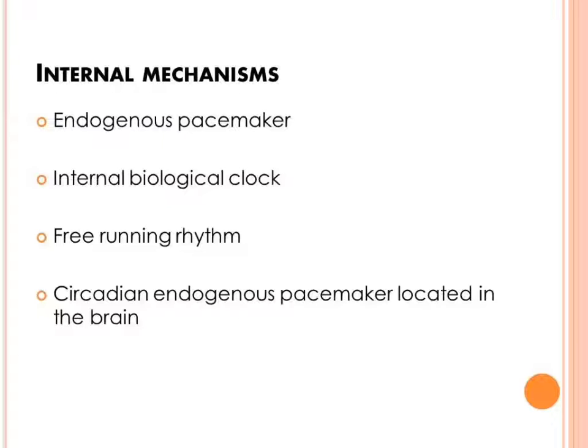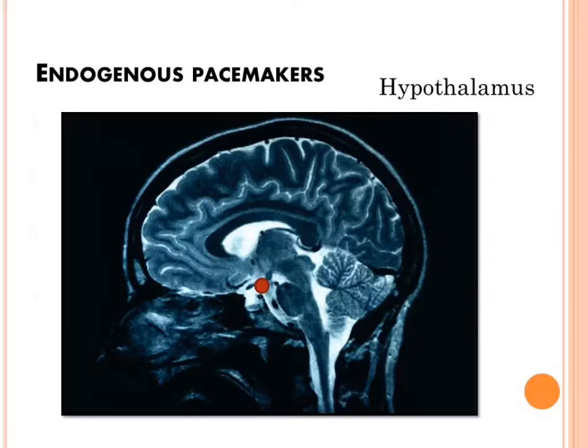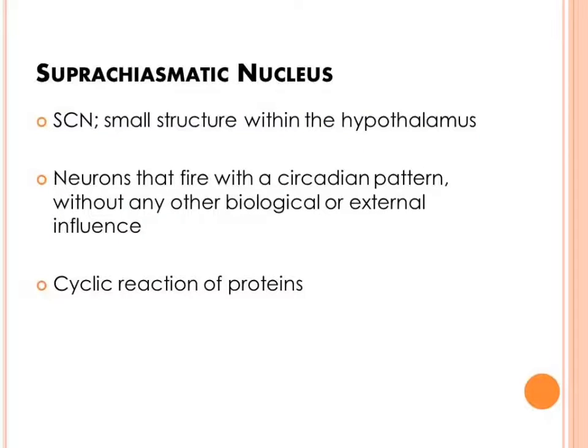The 24-hour circadian endogenous pacemaker is thought to be located within the human and mammal brain, in an area called the hypothalamus. The suprachiasmatic nucleus, or SCN for short, is a small structure within the hypothalamus that contains neurons that fire with a 24-hour pattern.